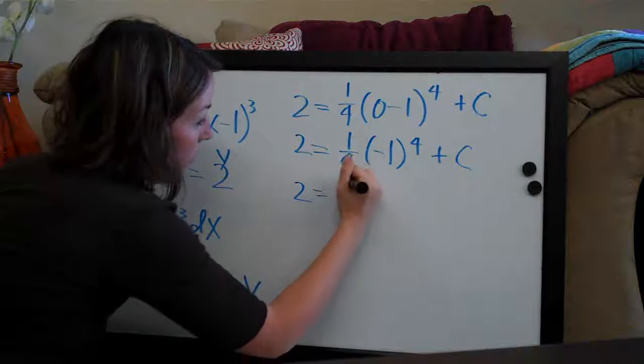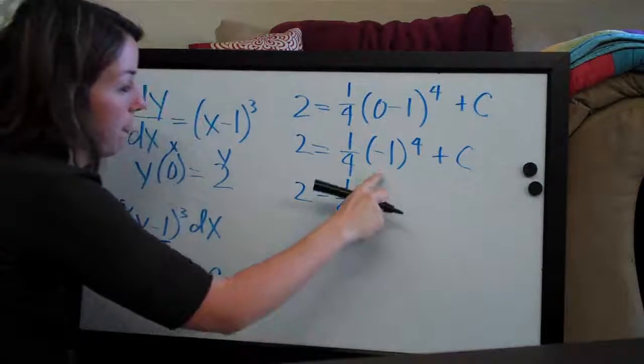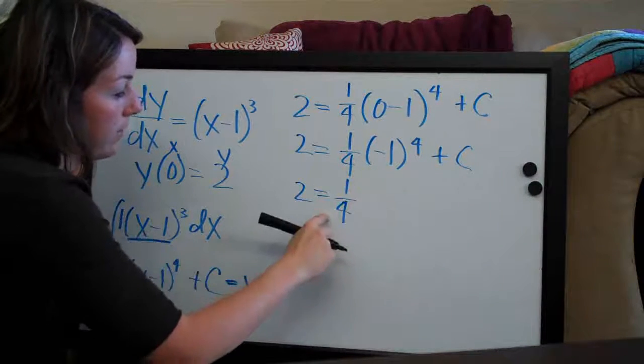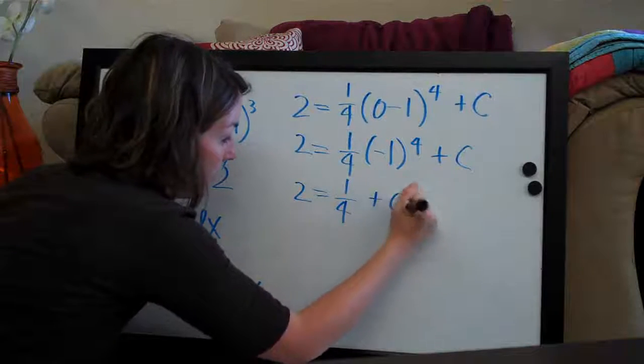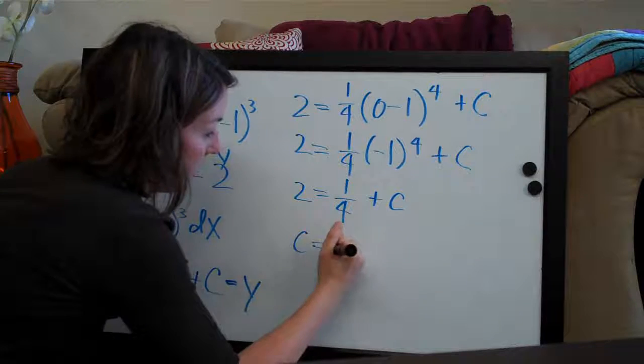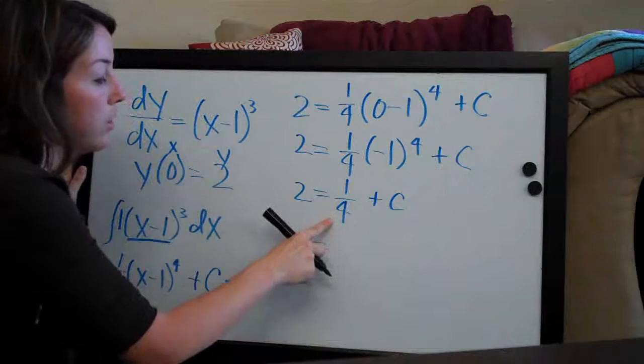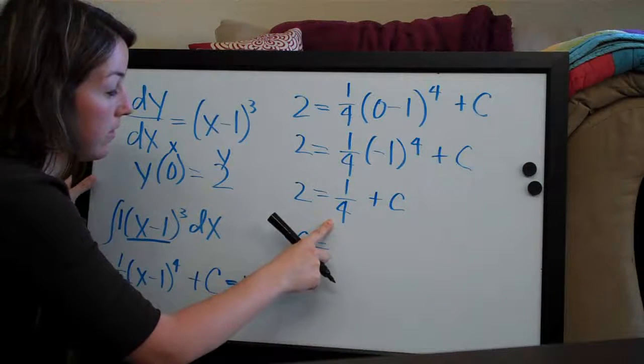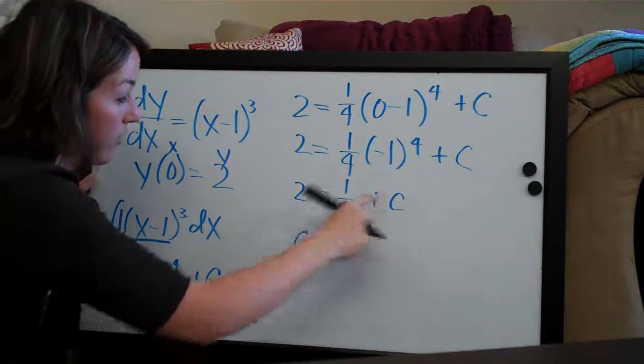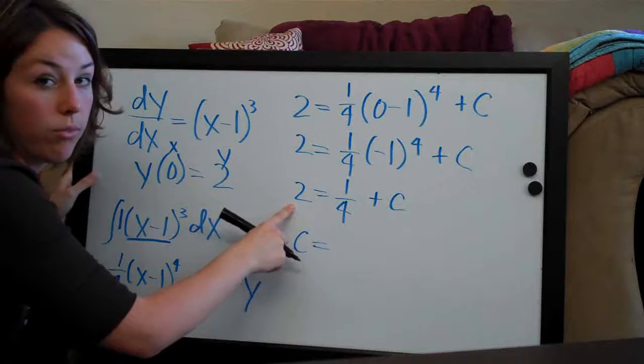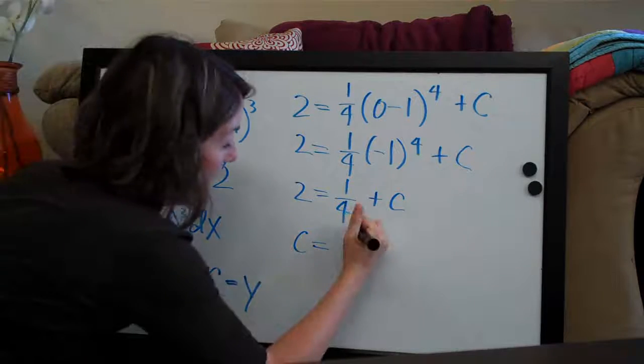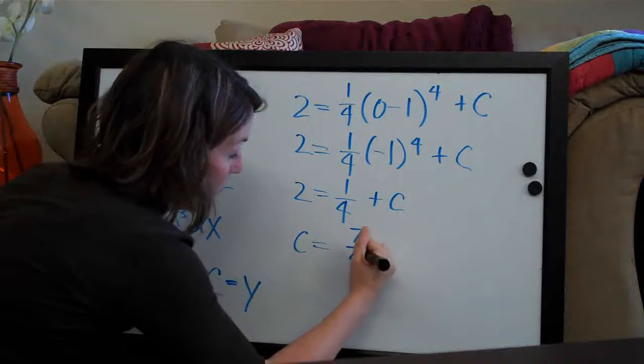So we'll have 2 = 1/4 times 1, we get 1/4 plus c. So then we get c equals, we subtract 1/4 from both sides, and it cancels here, and then we subtract 1/4 so we'll get c = 1 and 3/4, which is the same thing as 7/4.